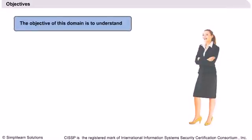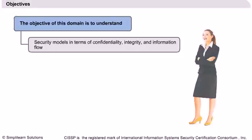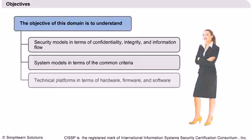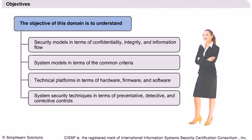According to the ISC2 Candidate Information Bulletin, a CISSP candidate should understand security models in terms of confidentiality, integrity and information flow; system models in terms of the Common Criteria; technical platforms in terms of hardware, firmware and software; and system security techniques in terms of preventative, detective and corrective controls.